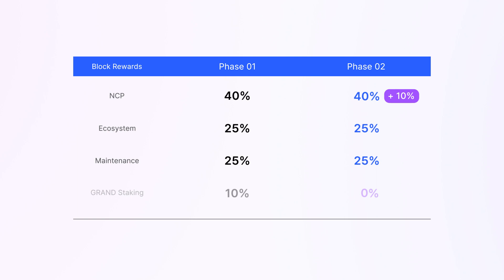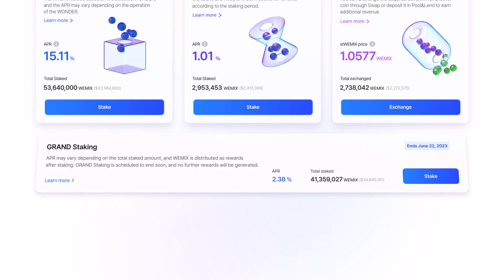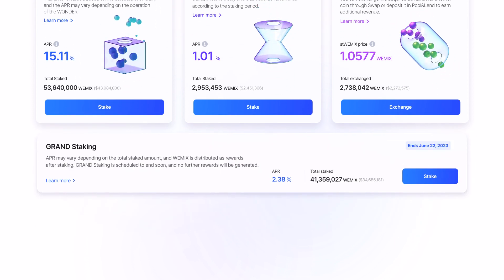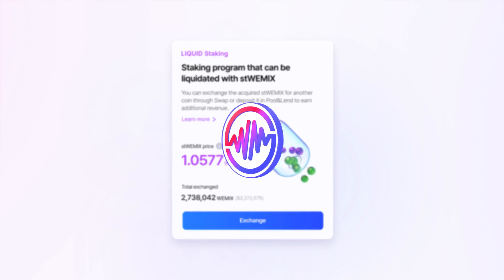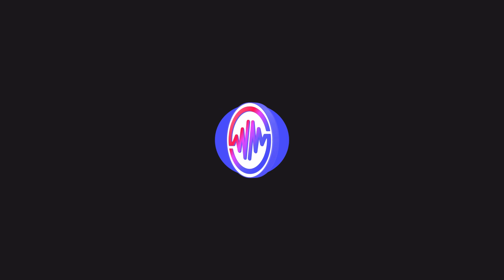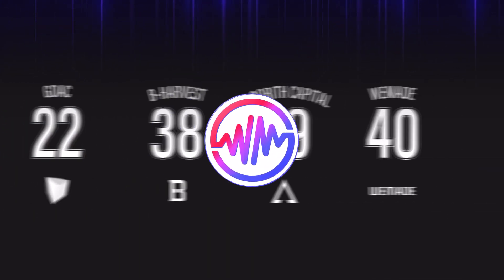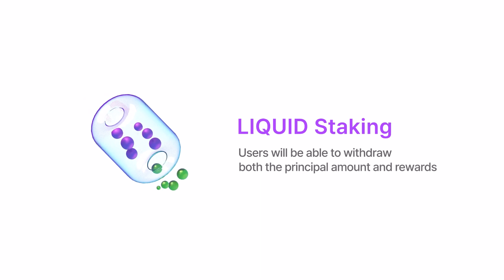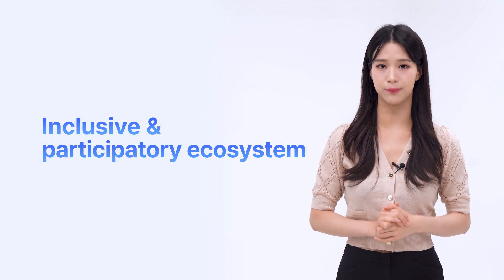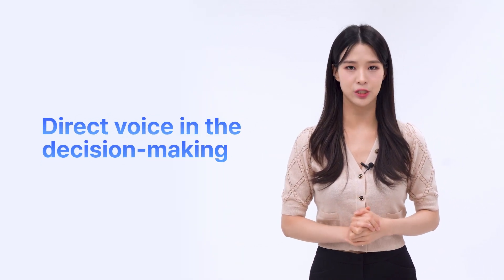This will increase the total rewards for NCPs to 50%, which will be distributed proportionally to the amount and duration of staked Wemix. As a result, grand staking will be discontinued and all deposited Wemix will be withdrawable. The introduction of wonderstaking will also bring about changes to liquid staking. Wemix deposited in liquid staking will be staked to one of 40 wonders through a smart contract. Withdrawals will become available for liquid staking — users will be able to withdraw both the principal amount and rewards. Wonderstaking will be a significant step towards a more inclusive and participatory ecosystem, where Wemix community members have a direct voice in the decision-making process.